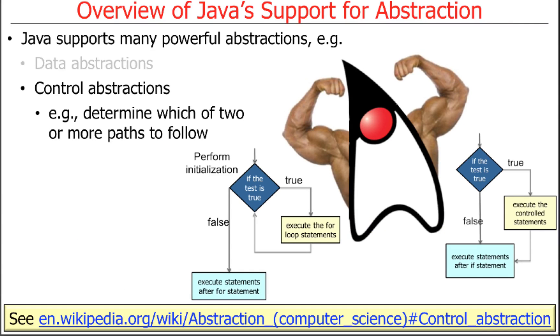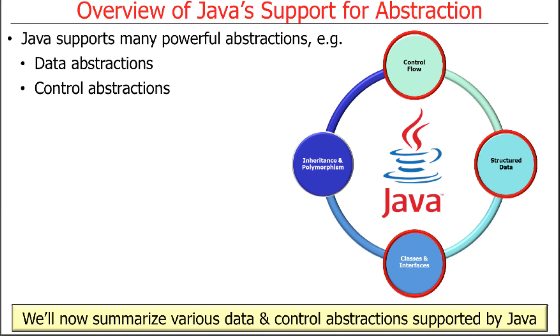There's also control abstractions, which really determine which of the paths, if there's a choice, to follow and how often to do the paths. And we'll see that there's a bunch of different ways to do that.